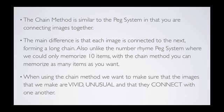The chain method is quite similar to the peg system, which we did in the last lecture, in that you're going to be connecting images together. The main difference is that each image in the chain method is connected to the next, forming a long chain. Unlike the number-peg system where we can only memorize ten items at a time, with the chain method we can memorize as many items as we want, which is a lot more beneficial when learning lots and lots of information.